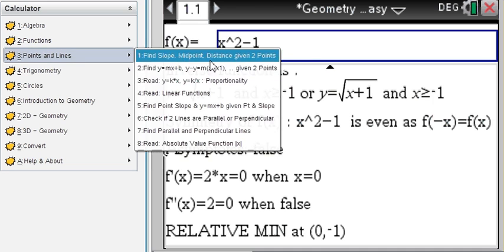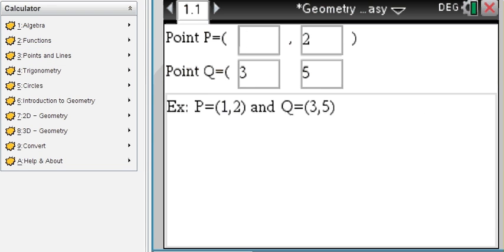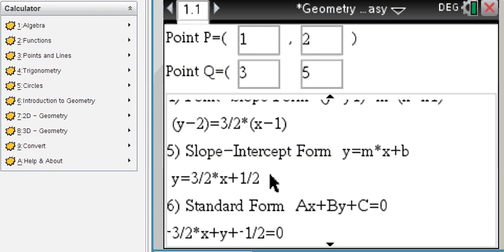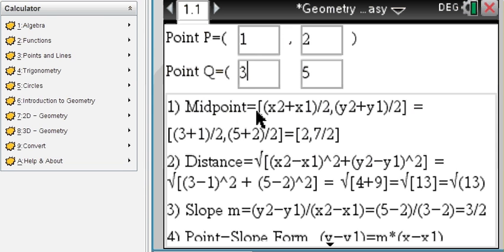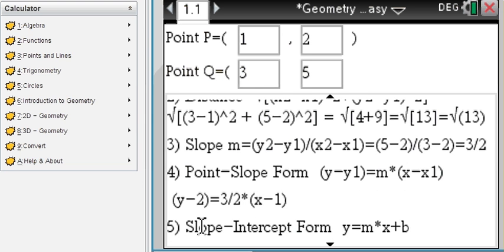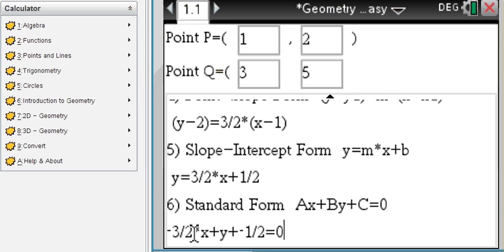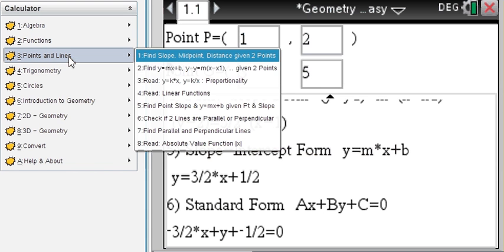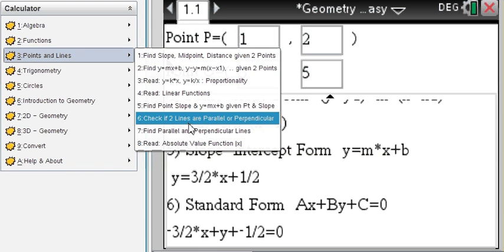So, points and lines. Say you're given two points, those two, and you can immediately find midpoint, distance, slope, point-slope form, slope-intercept form as well, and the standard form of a line passing through these two given points. That's just one example out of many more.